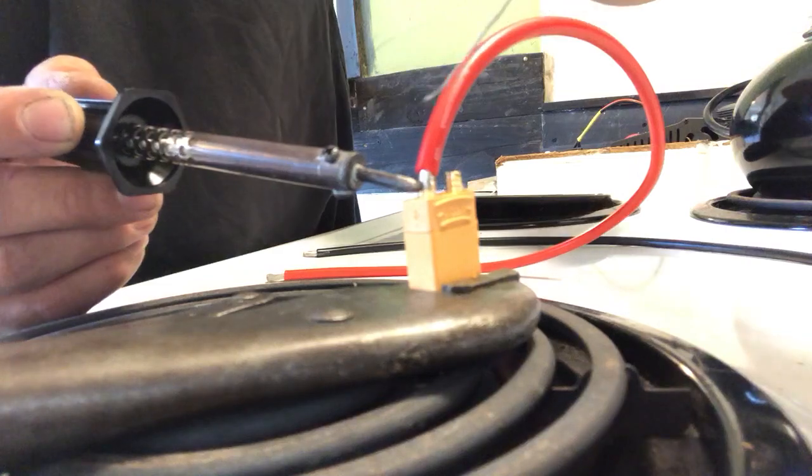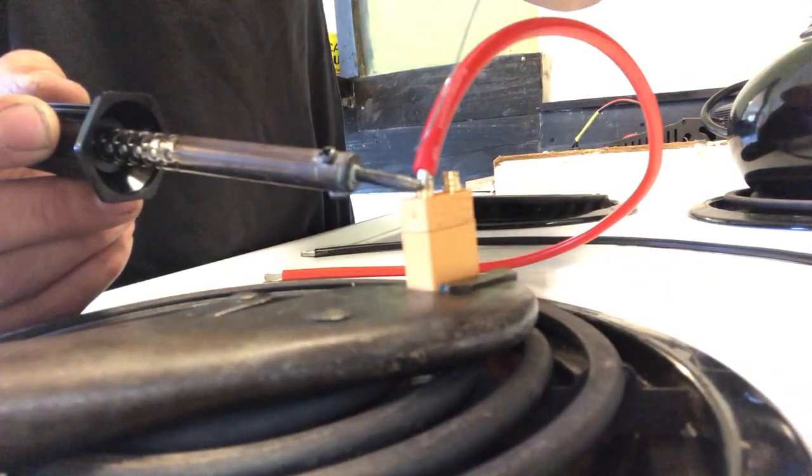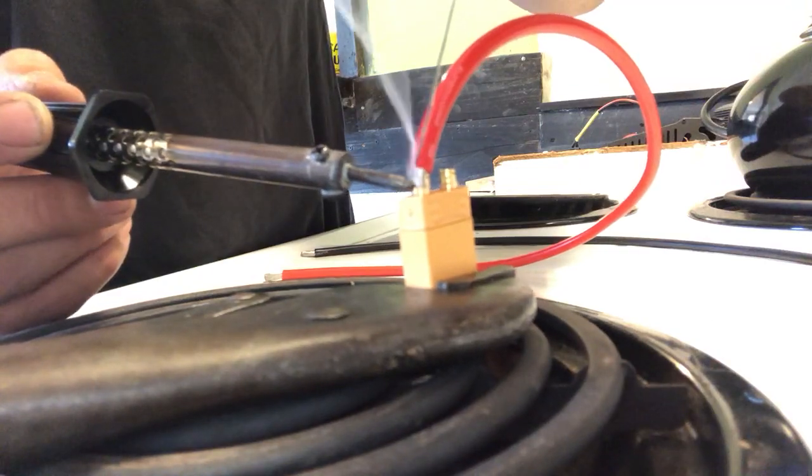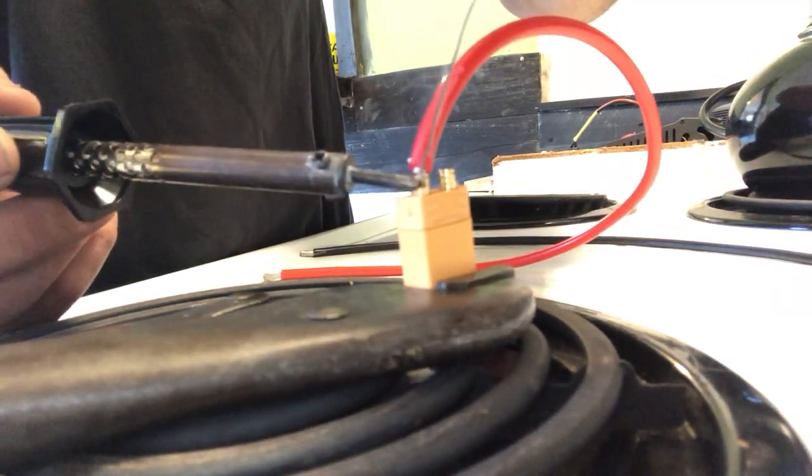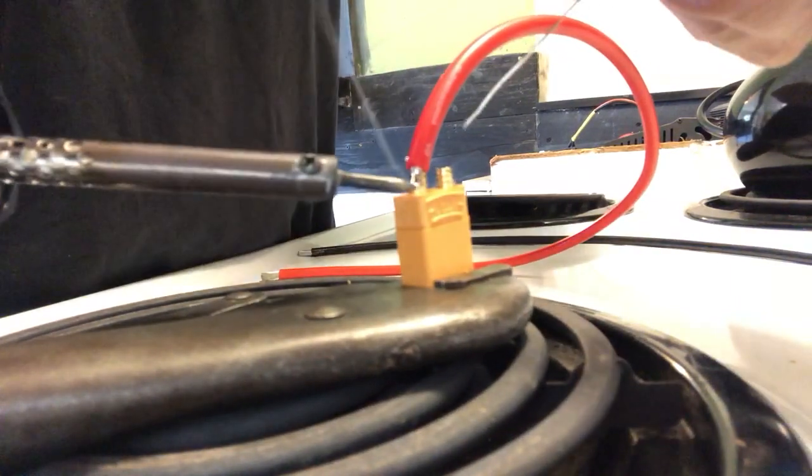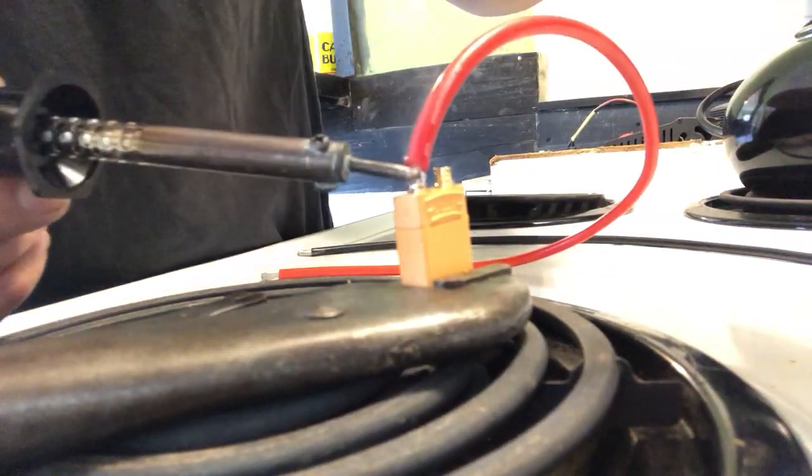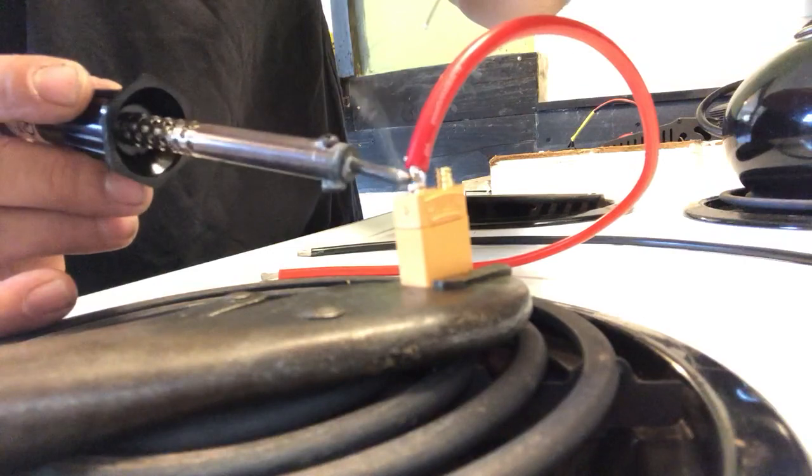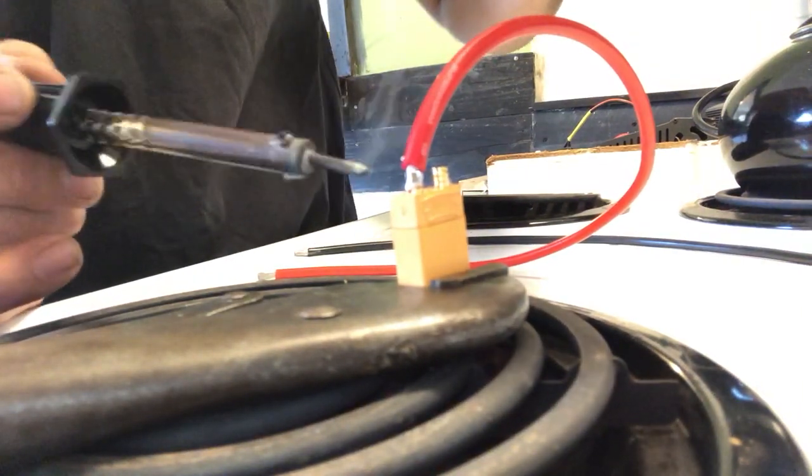What you want to do is, you want to get this nice and hot and you want to flow the solder on. That's why I like the flux already inside the solder. It just makes the job a lot easier, a lot quicker. What you want to do is do a nice bite on there. The solder flows down inside. You don't want to make it too hot because it'll melt inside the pin there.